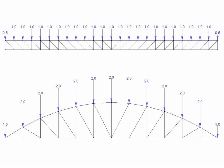The span is the same, the total load is the same, it's uniform in the spacing of the forces, but there are fewer forces and larger forces on the bow truss.